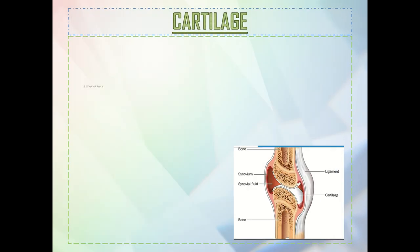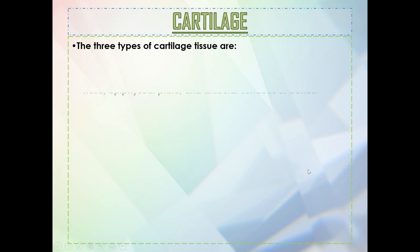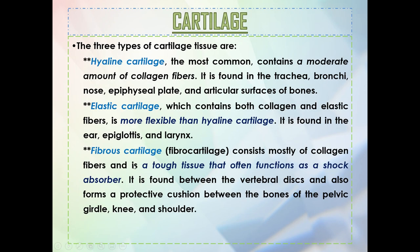Now let's talk about cartilage. It is a main type of connective tissue seen throughout the body, serving structural and functional purposes in joints, bones, spine, lungs, ears, and nose. Cartilage is a strong and smooth substance made up of chondrocytes — specialized cartilage cells — that produce a matrix of collagen, proteoglycans, and other non-collagenous proteins. There are three types of cartilage tissue: hyaline, elastic, and fibrocartilage.